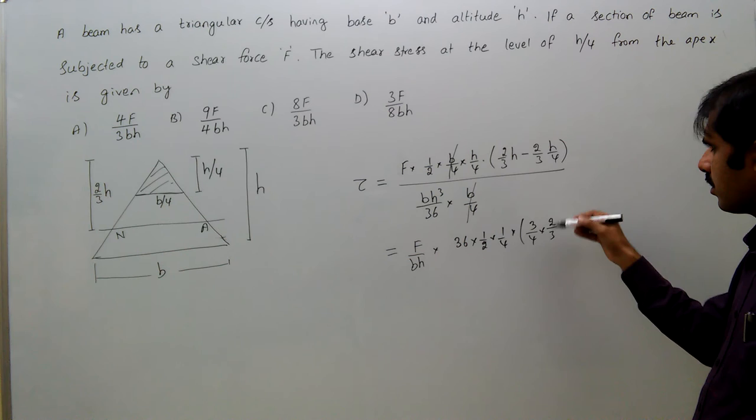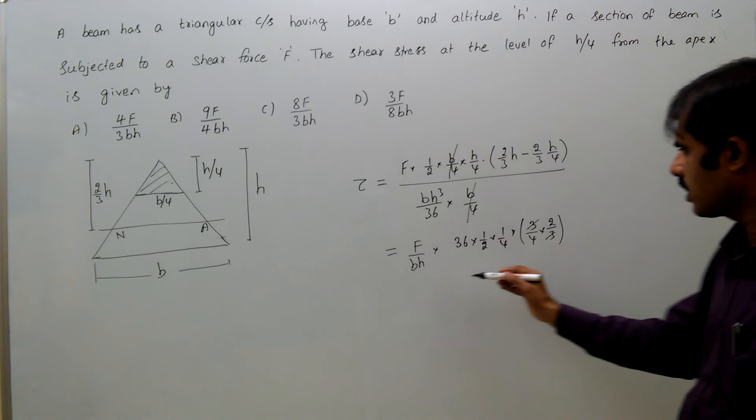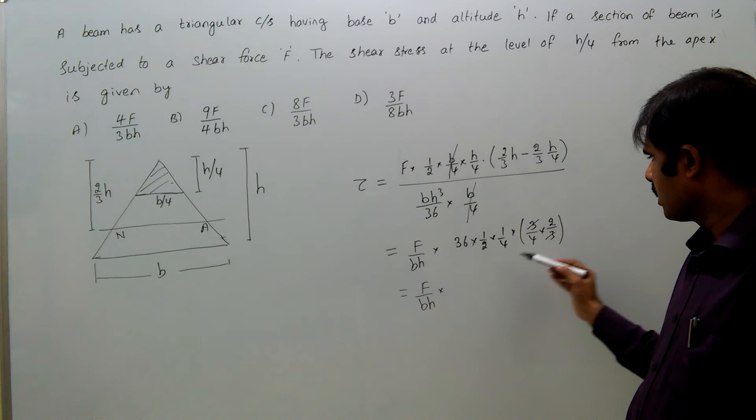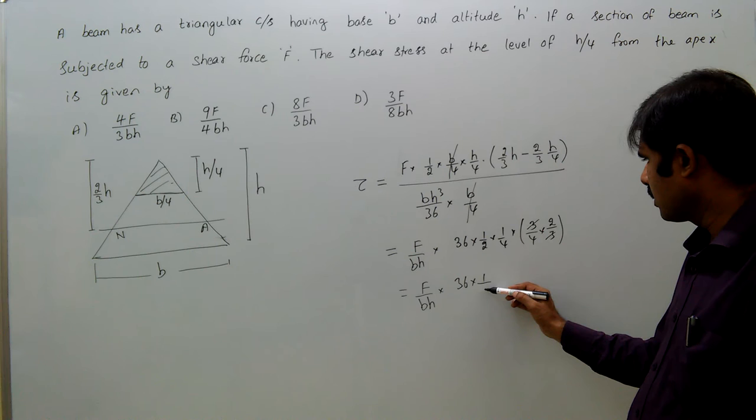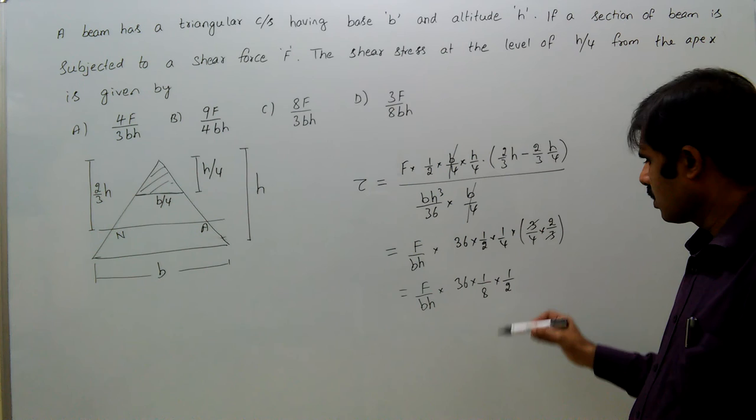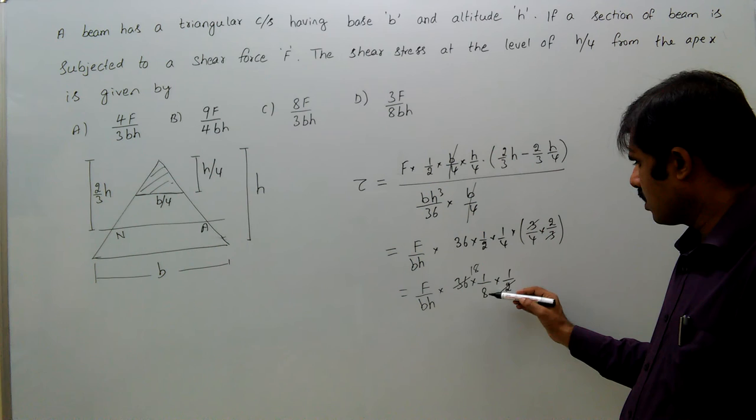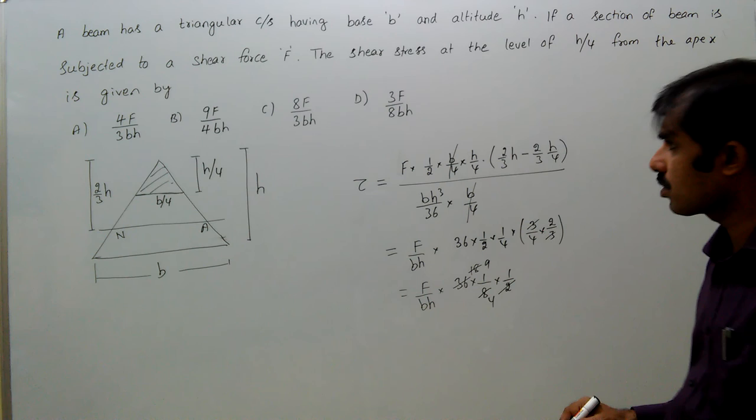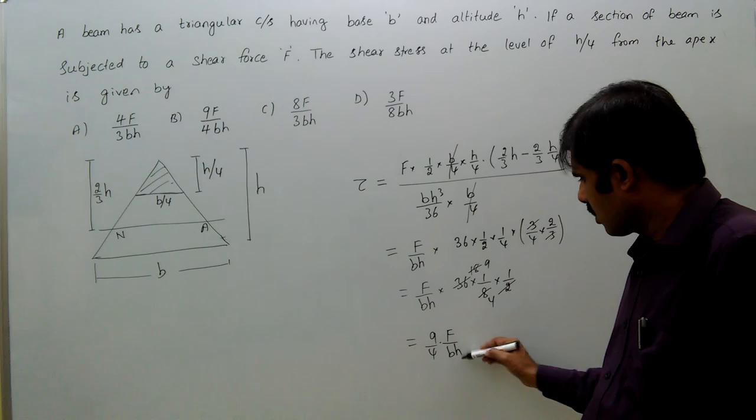So that is equal to F by BH into 36 into 1 by 8 into 1 by 2. So that is equal to 2 eighths, 2 ninths, and 2 fourths. So that is equal to 9 by 4 F by BH. The answer is B.